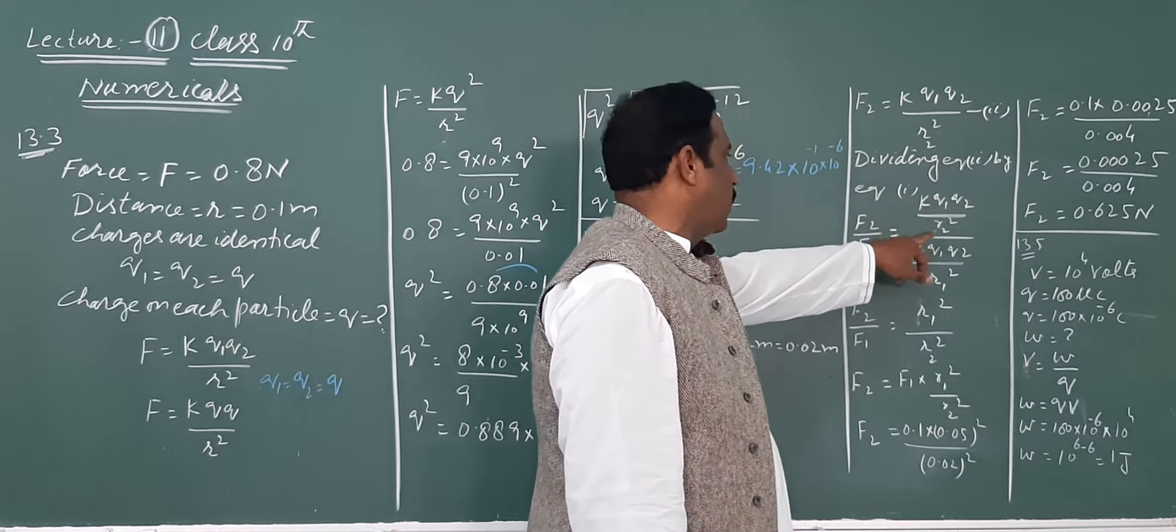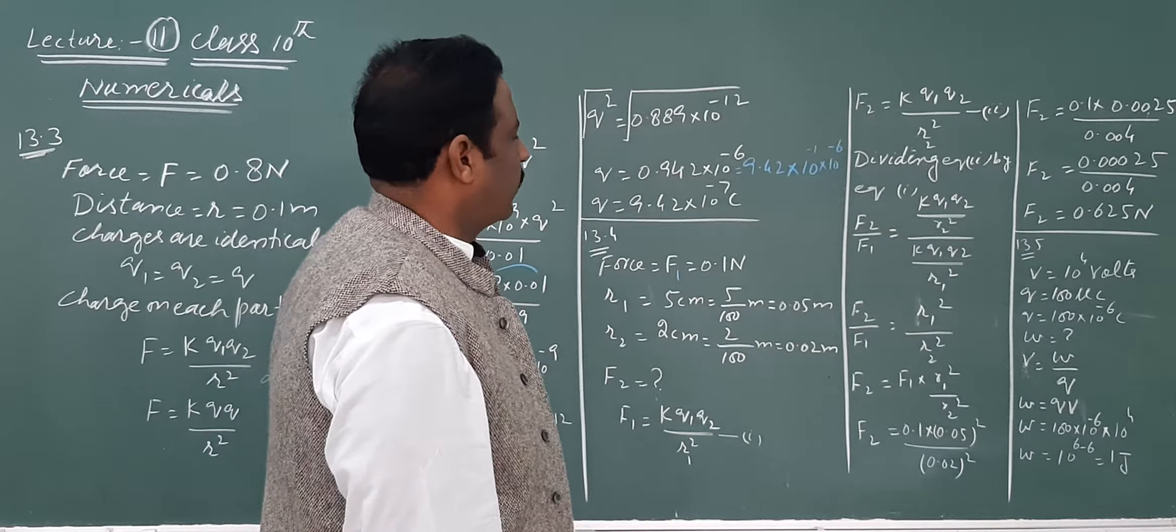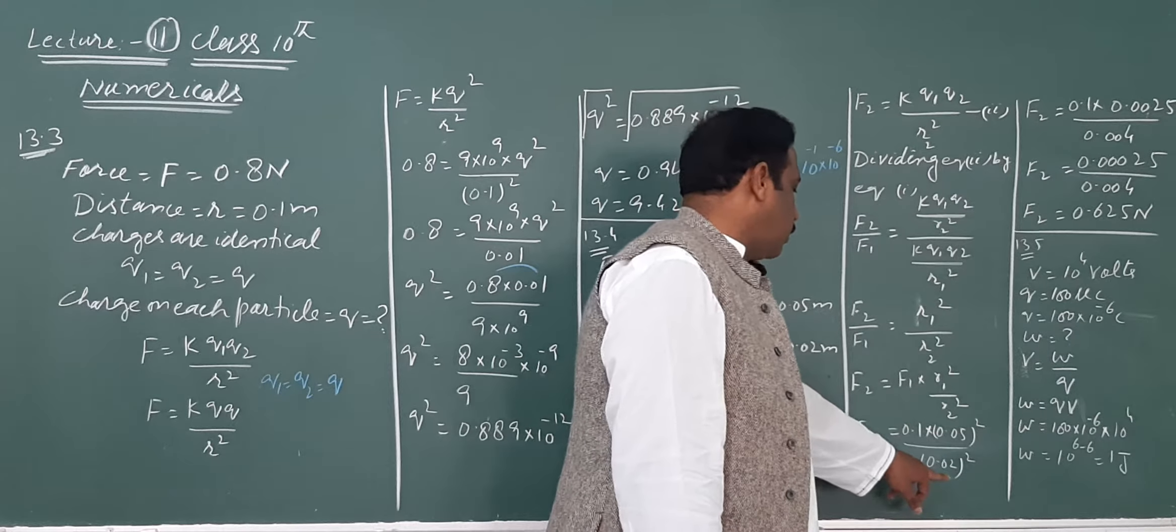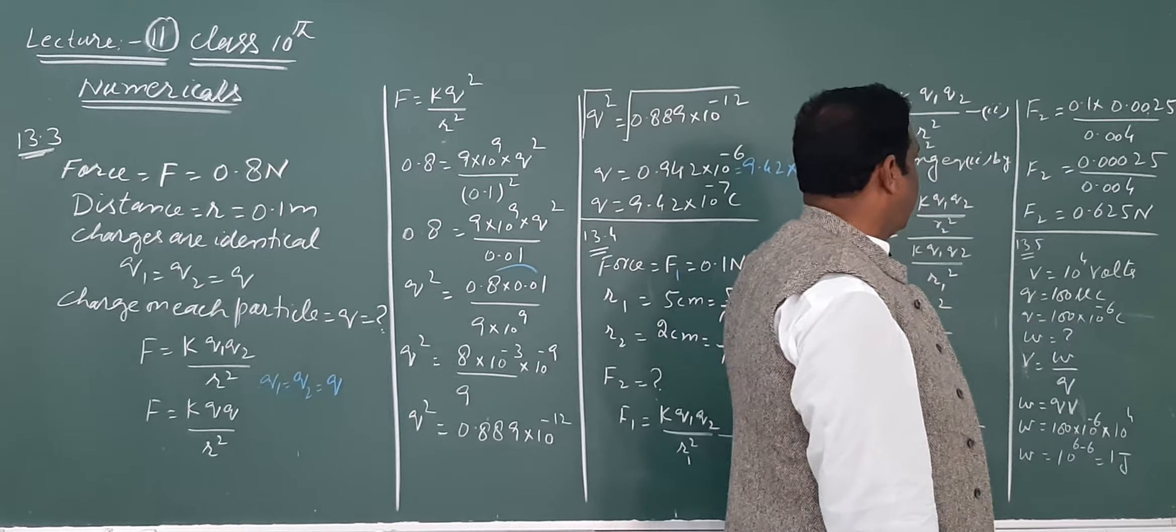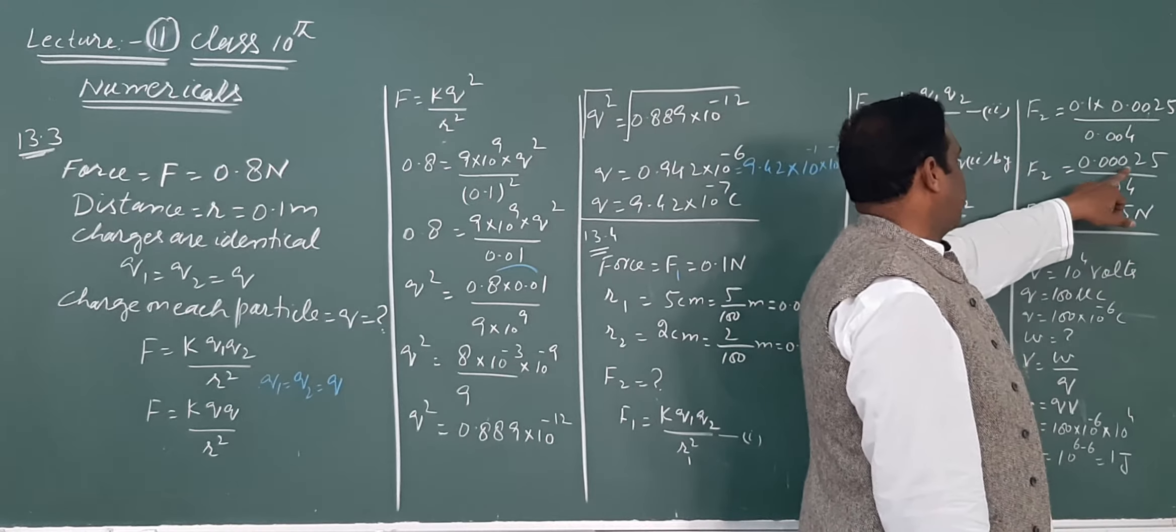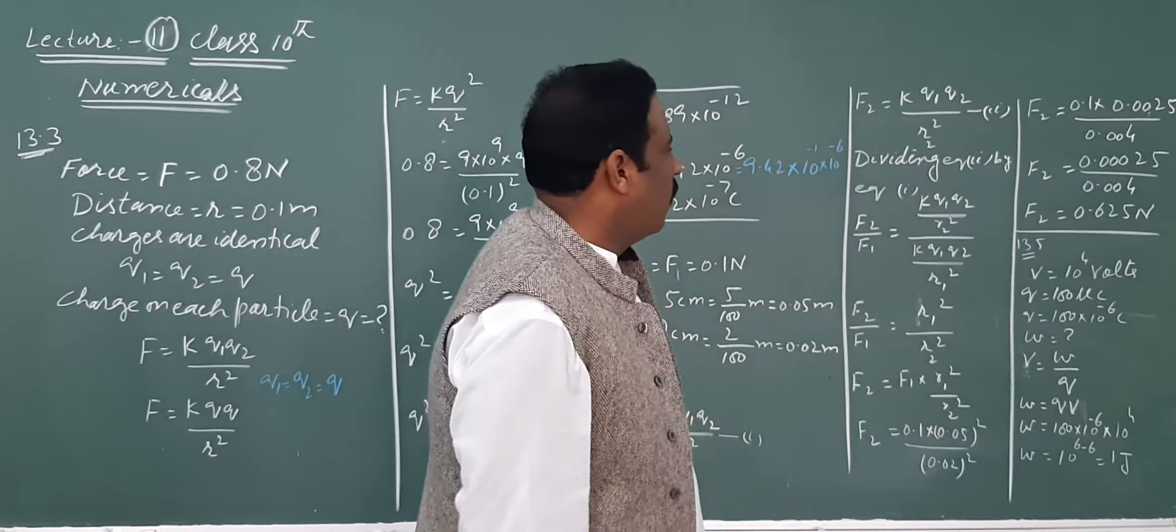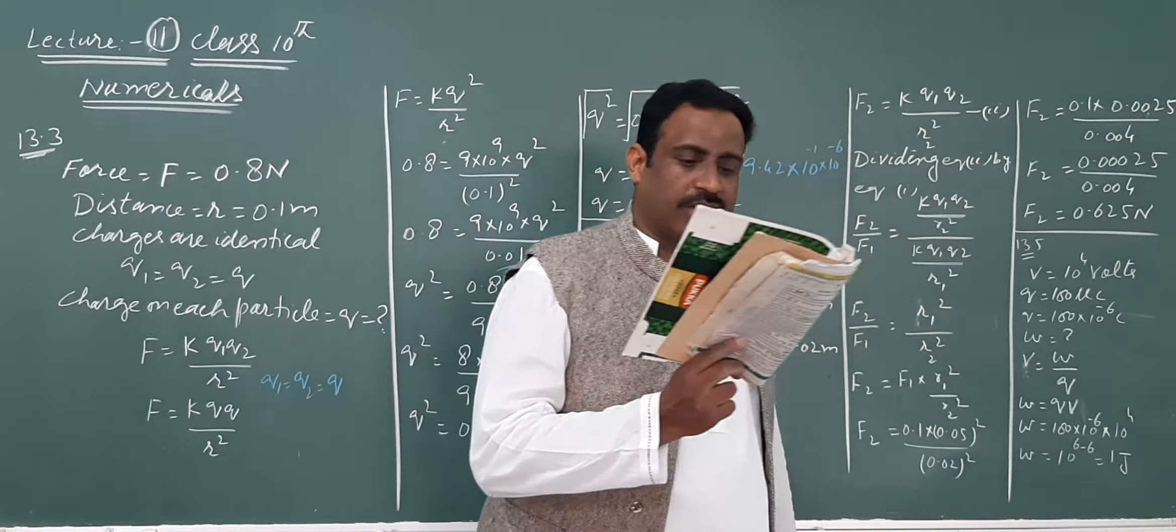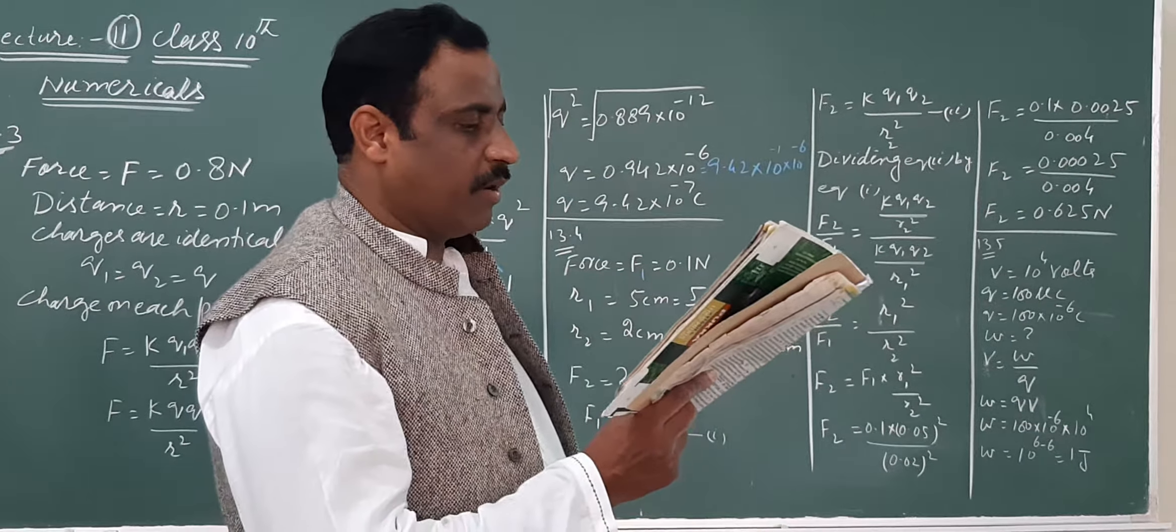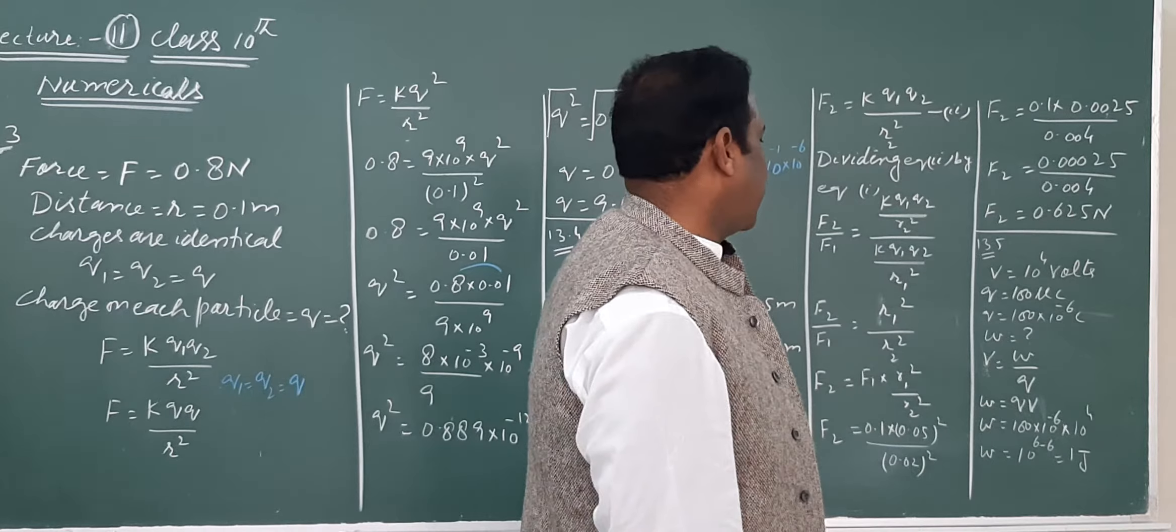By Coulomb's law, F1 equals k Q1 Q2 over R1 squared, and F2 equals k Q1 Q2 over R2 squared. Dividing F2 by F1, we get F2 over F1 equals R1 squared over R2 squared. F2 equals F1 multiplied by R1 squared over R2 squared, which equals 0.1 multiplied by 0.05 squared over 0.02 squared. This gives 0.1 multiplied by 0.0025 divided by 0.0004, which equals 0.625 newton.